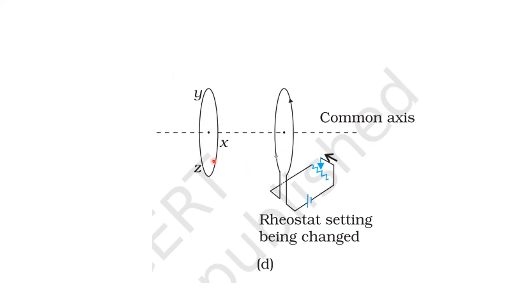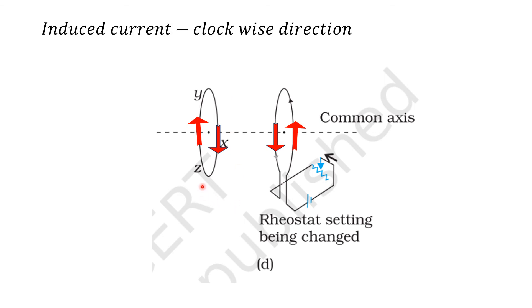Here, this is the primary coil and this is the secondary coil. Both coils are present on the common axis. The condition is the rheostat setting being changed — resistance is decreased, so current is increased and magnetic flux is increased. See the direction of the current in the primary coil — it is given. Take the opposite arrow mark in the secondary coil on the parallel side. Here it is upward direction, so on the parallel side take downward direction; here it is downward, so in the secondary coil we take upward direction. The direction of the induced current is Z, Y, X.